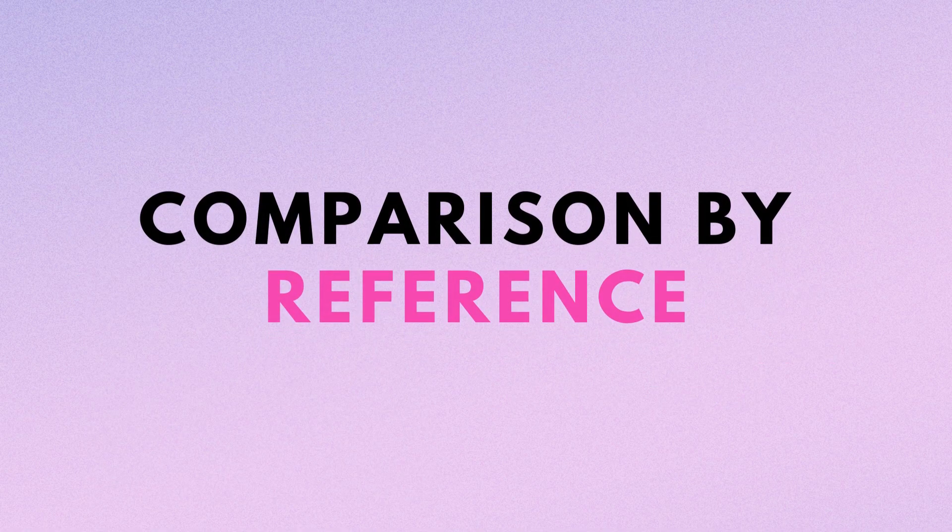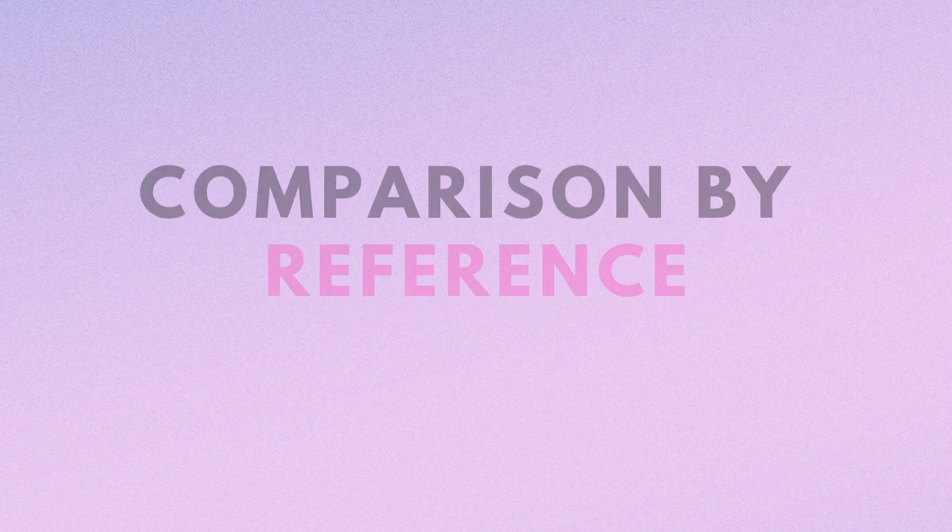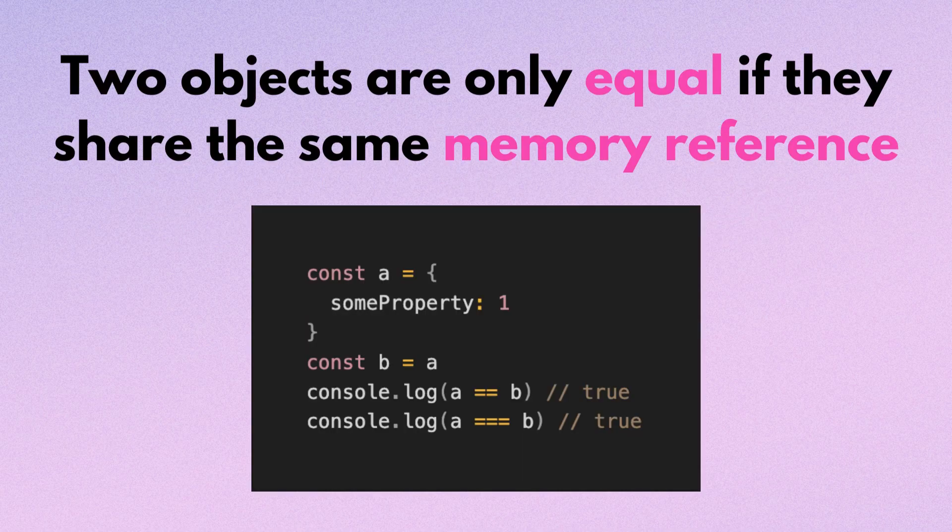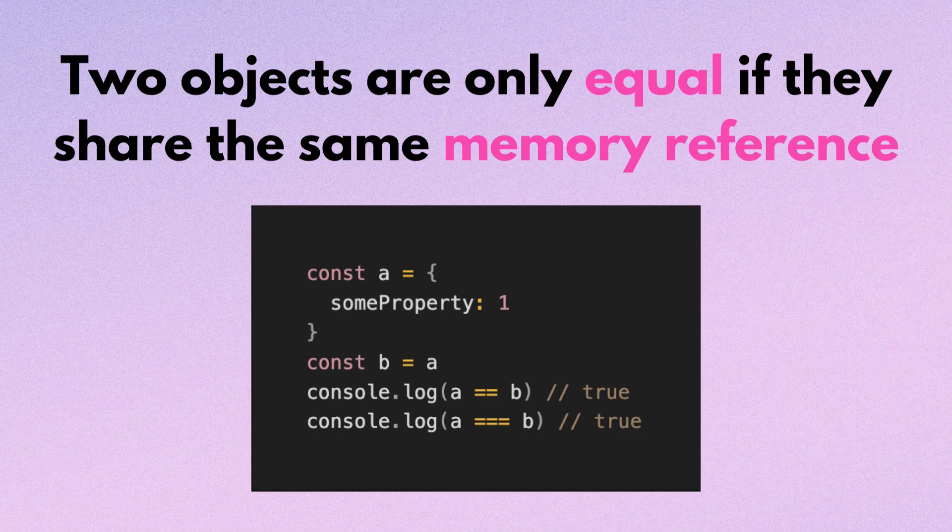Comparison by reference: two objects are only equal if they share the same memory reference.